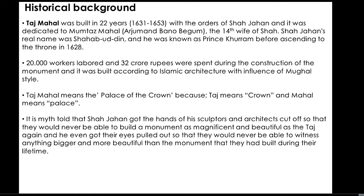Taj Mahal historical background in Agra, India: the Taj Mahal was built over 22 years, from 1631 to 1653, by order of Shah Jahan, and was dedicated to Mumtaz Mahal, Arjumand Banu Begum, the 14th wife of Shah Jahan. His real name was Shahab-ud-Din, and he was known as Prince Khurram before ascending to the throne in 1628. Taj Mahal means 'palace of the crown,' as Taj means crown and Mahal means palace.